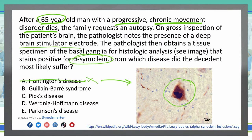Answer B: Guillain-Barré syndrome. Guillain-Barré is a demyelinating disorder. It does not involve Lewy bodies. It can cause movement problems, but those are due to demyelination, not due to any Lewy bodies present. So that rules out B.